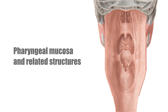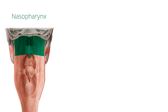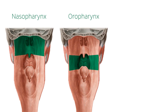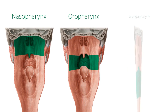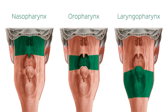Let's start off with how we divide the pharynx. It can be divided into three structures: the nasopharynx, which you see here highlighted in green; a bit more inferiorly the oropharynx; and the laryngopharynx, which you see here even more inferiorly, also highlighted in green.